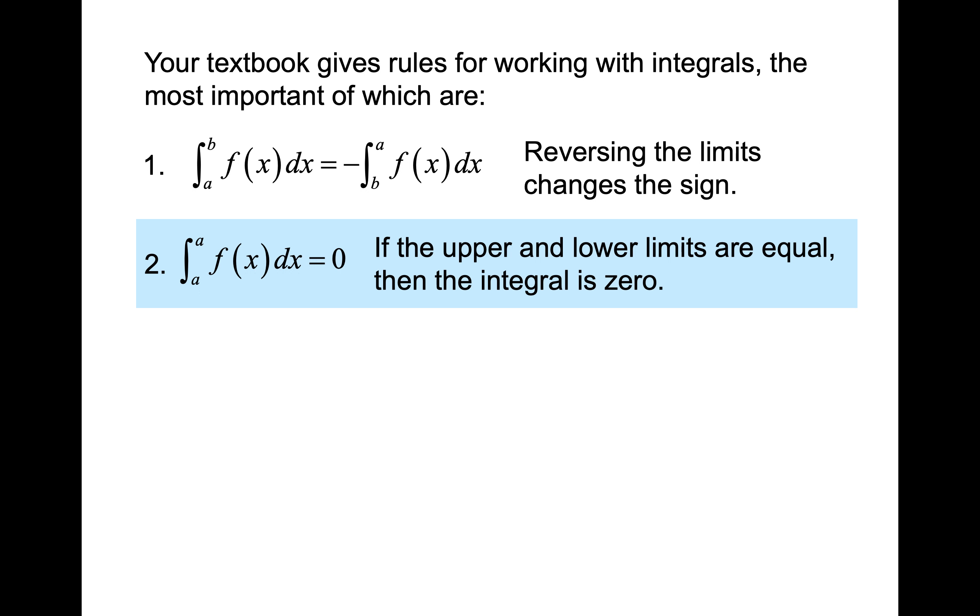So sometimes it's just convenient to do that. The second one, if the upper and lower limits are equal, then the integral is zero. So if you think about what this is implying, if you are finding the area under the curve, but you're just going from a to a, which means you're not going anywhere, you don't have any area under the curve, so it would be zero.